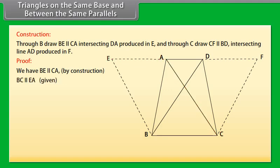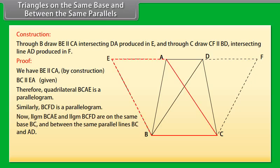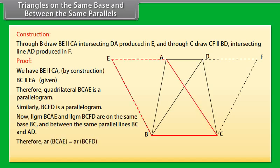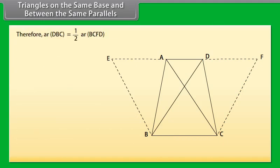Construction: Through B, draw BE parallel to CA intersecting DA produced in E, and through C, draw CF parallel to BD intersecting line AD produced in F. Proof: BE is parallel to CA by construction, and BC is parallel to EA — this is given. Therefore, quadrilateral BCAE is a parallelogram. Similarly, BCFD is a parallelogram. Parallelogram BCAE and parallelogram BCFD are on the same base BC and between the same parallel lines BC and AD. Therefore, area of parallelogram BCAE equals area of parallelogram BCFD — mark it as 1.